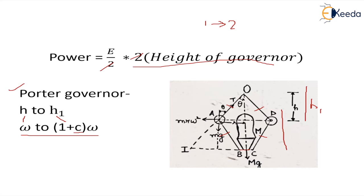Now let's take the case of a porter governor and we are assuming that the governor is going from some initial height h to h1. And while doing so, the speed is increasing from some value which is omega to some new value which is (1+c) into omega. So in questions, whenever you are given the change in speed, it is in terms of percentage. Let's say 6% change from the equilibrium or the mean speed.